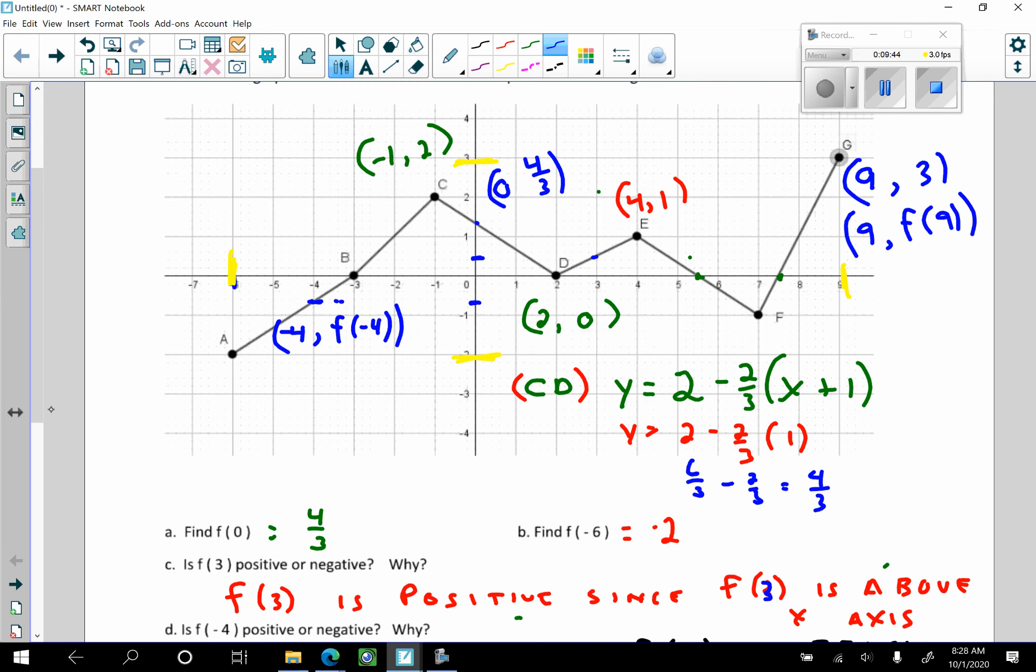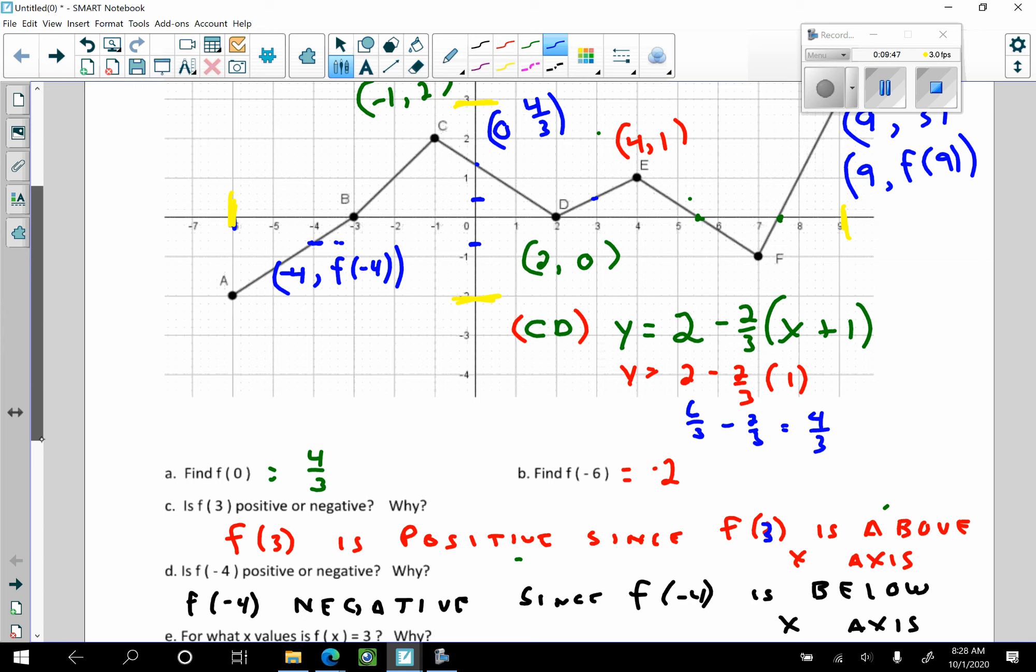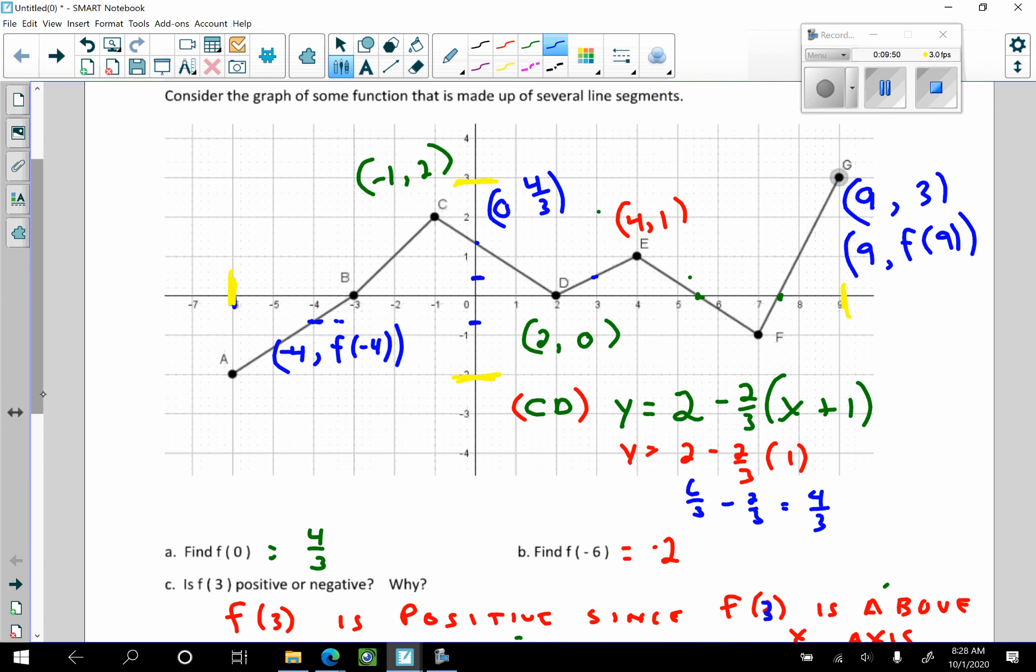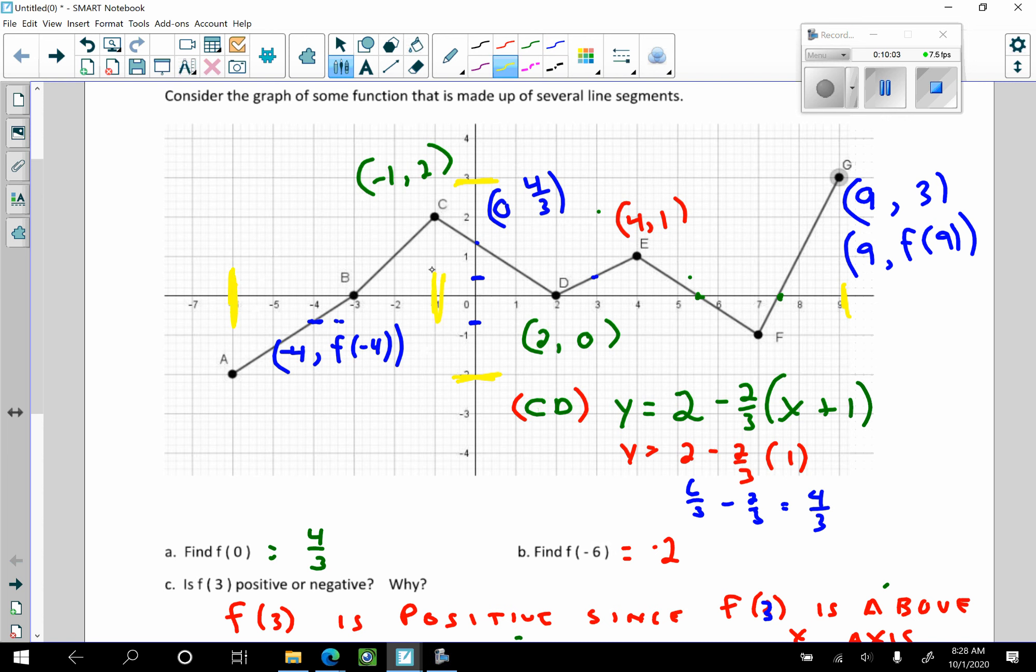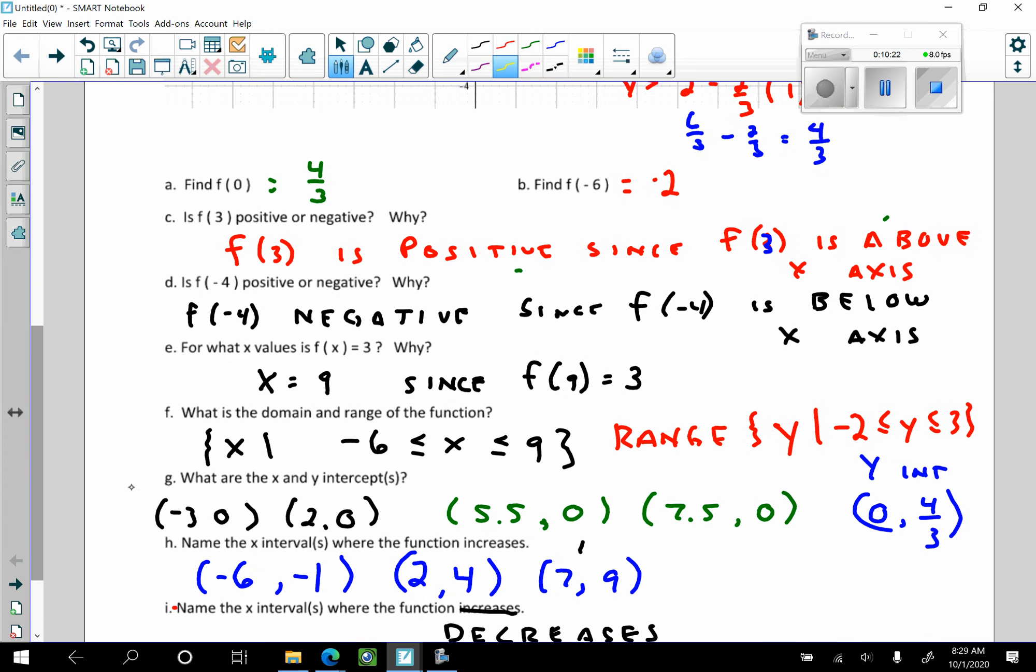The last important thing from this particular lesson is, where is that function increasing or decreasing? It's increasing when the X's increase, if the Y's increase. So that thing is increasing from negative 6 to negative 1, and from 2 to 4, and from 7 to 9. So it's increasing from here to here, from here to here, and from here to here. Can you do that on an assessment? That's where that rascal is increasing. From negative 6 to negative 1, 2 to 4, and 7 to 9.